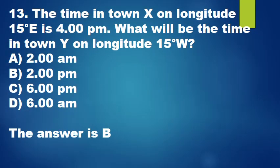Question 13: The time in town X on longitude 15 degrees east is 4 p.m. What will be the time in town Y on longitude 15 degrees west? A. 2 a.m., B. 2 p.m., C. 6 p.m., D. 6 a.m. The answer is B.